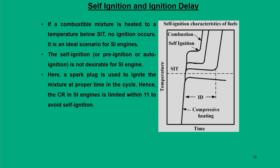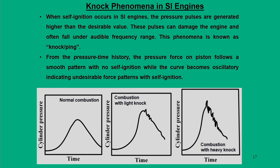Parameters such as temperature, pressure, density, turbulence, and air-fuel ratios can change the ignition delay. With a proper mixture, ignition delay can be reduced. For SI engines, compression heating must be kept below the SIT so the fuel does not self-ignite — it must remain as an unburnt charge awaiting the spark plug. Therefore, the compression ratio in SI engines is limited to up to 11 to avoid self-ignition.